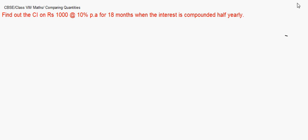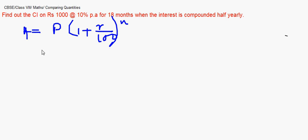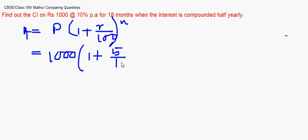We write the same formula: amount equals principal into (1 + r/100) to the power n. Principal is 1,000. Again, 10 percent is per annum but compounded half yearly, so the rate becomes 5 percent, that is 5/100. In 18 months, since the interest is paid every six months, you get three interest payments, so n equals 3.